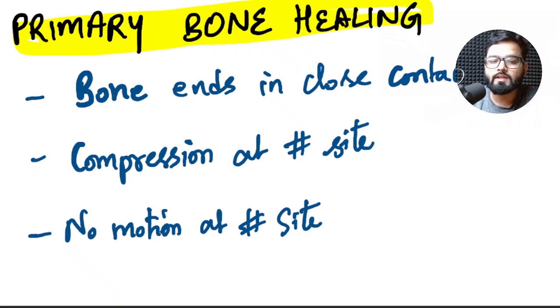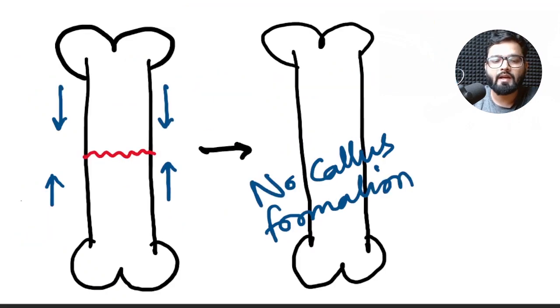What are the three prerequisites? The bone ends should be in close contact. There should be compression at the fracture site and there should be no motion at the fracture site. In this diagram you can see that there is no gap and complete contact at the fracture site and there is compression at the fracture site and absolutely no movement which will stimulate primary healing and you can see that it heals without formation of any callus.